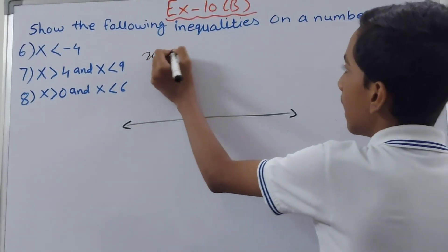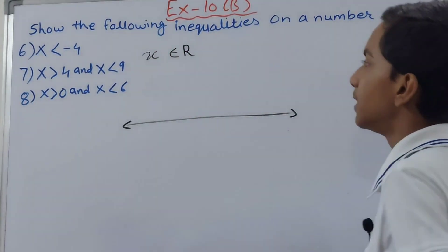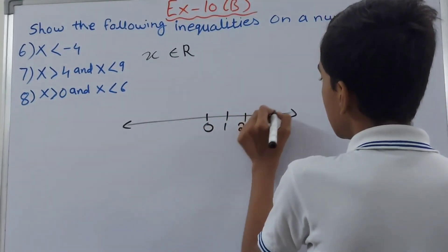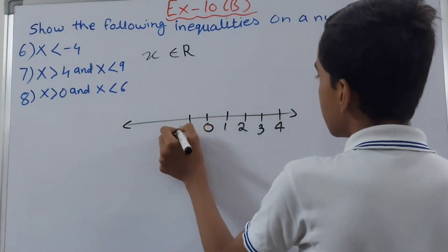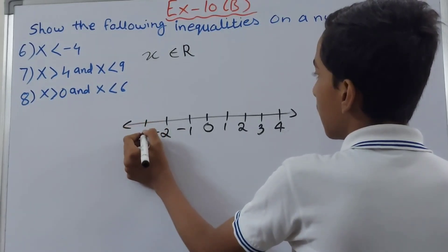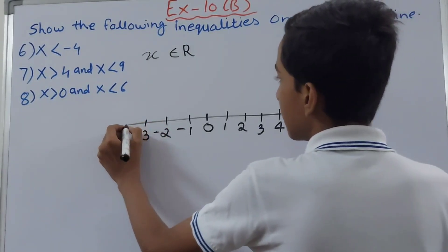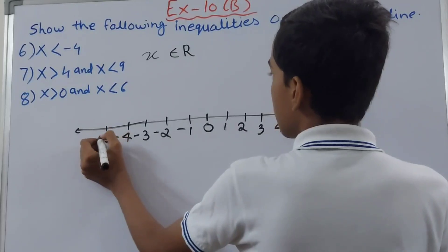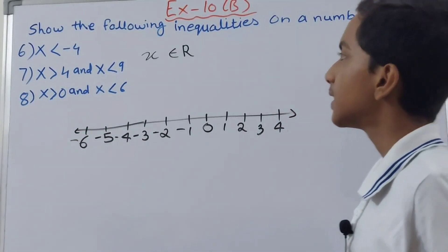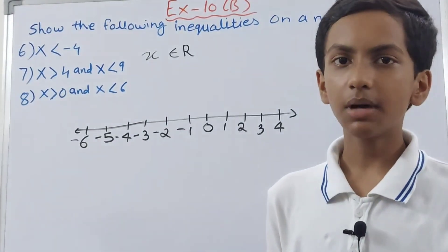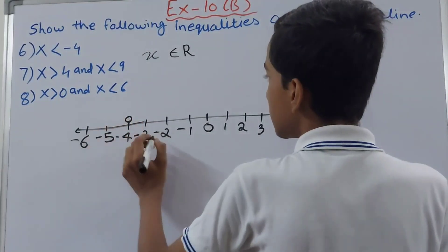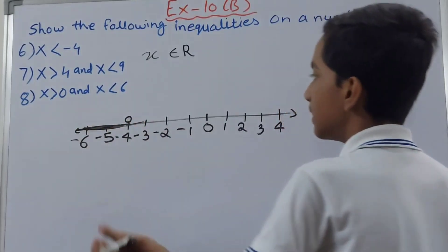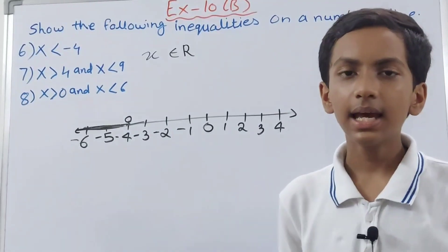So again we write here x belongs to R, and this R is real numbers. Now we start. So this becomes 0, 1, 2, 3, and 4, here minus 1 and then minus 2, minus 3, and so on. We have to make it like this: minus 3, minus 4, minus 5, minus 6. Now we see here that it is telling us that value of x has to be less than minus 4. So minus 4 is over here, so we open the circle and highlight this part which is showing that value here is less than minus 4. Basically you can highlight it like this also. And this is how we have represented the first inequality.